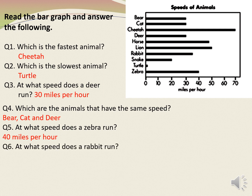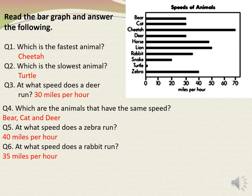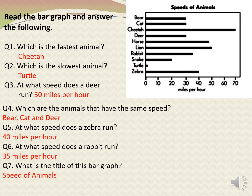Next: at what speed does a rabbit run? Let's see the bar which represents the speed of a rabbit. The bar is touching the number between 30 and 40. Therefore, our answer will be 35 miles per hour. Next: what is the title of this bar graph? The title of this bar graph is speeds of animals.